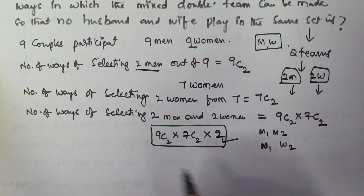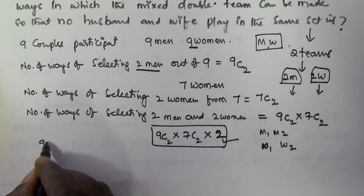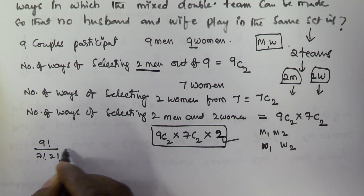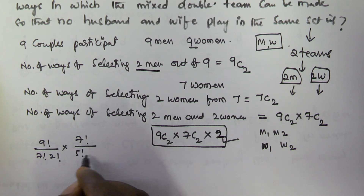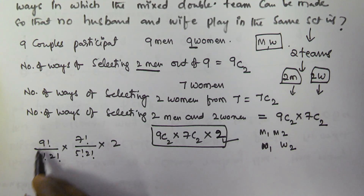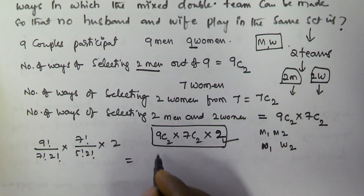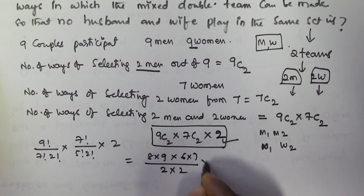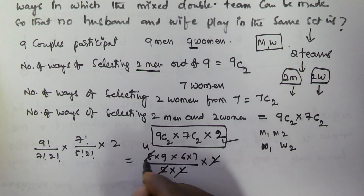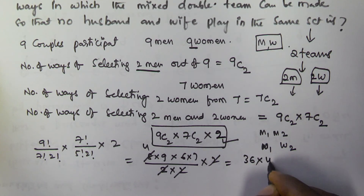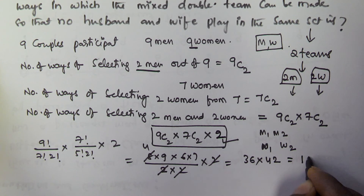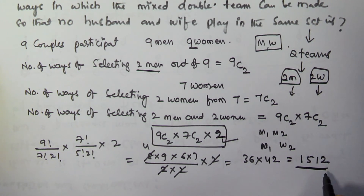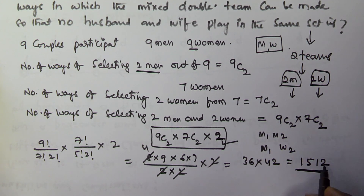So the total is 9C2 × 7C2 × 2. Now 9C2 = 9! / (7! × 2!) and 7C2 = 7! / (5! × 2!). Simplifying: the 7 factorials cancel, leaving 9×8 / 2, and 7×6 / 2, multiplied by 2. So 36 × 21 × 2 = 1512. These are the number of ways in which a mixed double team can be made so that no husband and wife play in the same set. Thank you for watching, please subscribe.